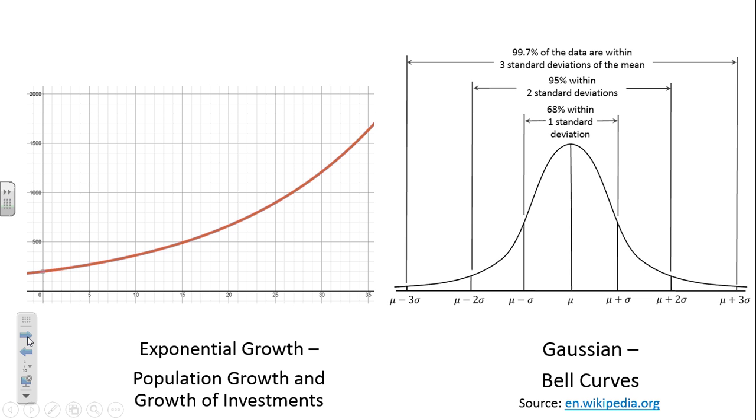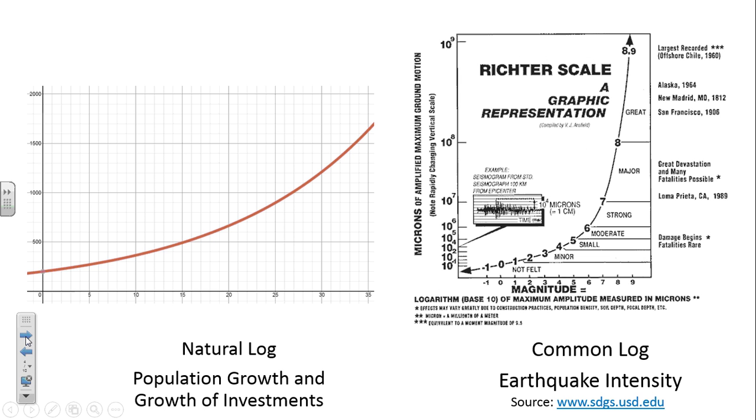Gaussian are bell curves. We see that when we're in statistics class talking about standard deviations in a bell curve situation. Also in academia period, when you're talking about SATs, your NISA tests and so forth, that type of a curve. Natural log is another one, population growth again, and then growth of investments. Natural log and log can kind of be interchanged. Common log is often used for earthquake intensity, to determine how intense a particular earthquake was on the Richter scale.